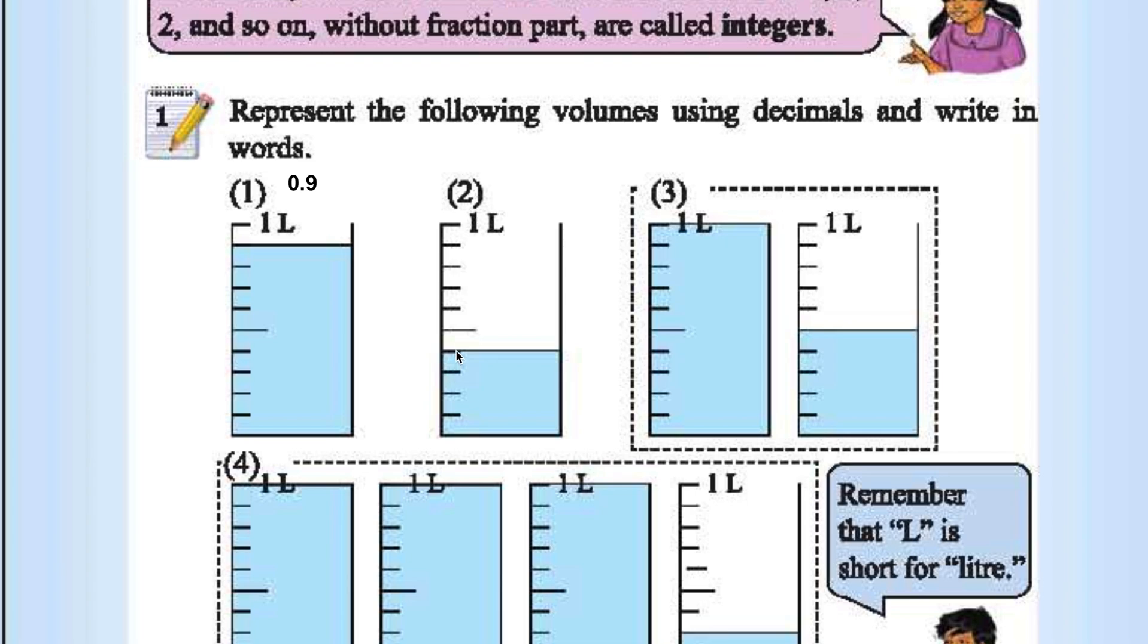1, 2, 3, 4. This one is 0.4 liter. 0.4. If you want to include the unit also, you can include the unit. This is 0.4 liter.